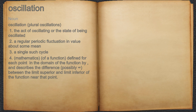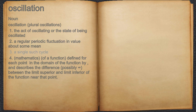Oscillation. Noun. 1. The act of oscillating or the state of being oscillated. 2. A regular periodic fluctuation in value about some mean. 3. A single such cycle.